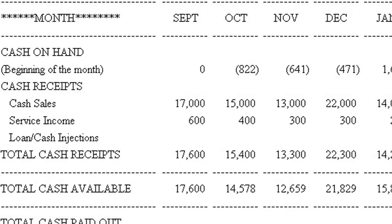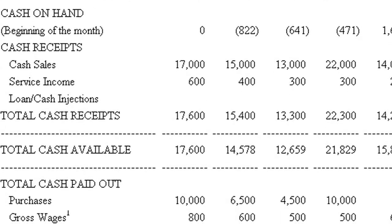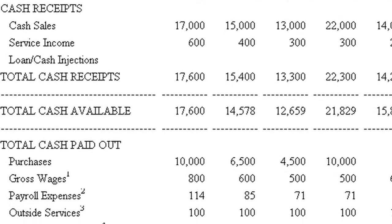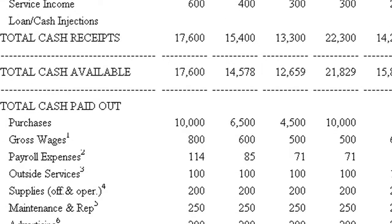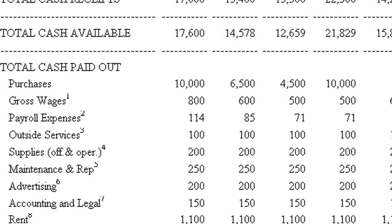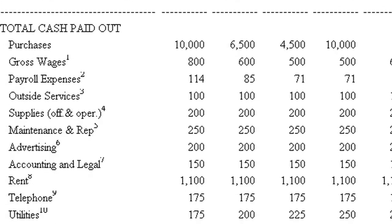The first section will show the cash provided or used by operating activities. You'll see net income at the beginning, and then non-cash expenses added to that number and non-cash gains subtracted from that number, as well as changes between periods for major balance sheet accounts to arrive at the net cash used or provided by operating activities.